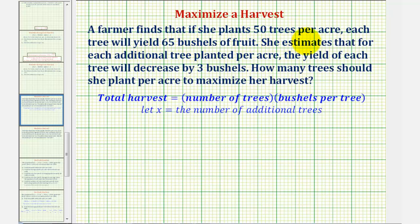A farmer finds that if she plants 50 trees per acre, each tree will yield 65 bushels of fruit. She estimates that for each additional tree planted per acre, the yield for each tree will decrease by three bushels. How many trees should she plant per acre to maximize her harvest?